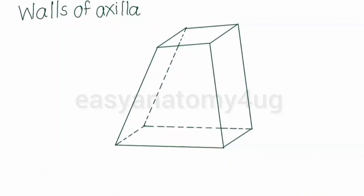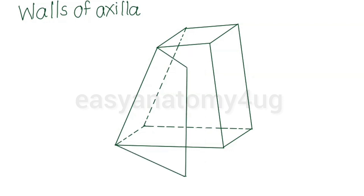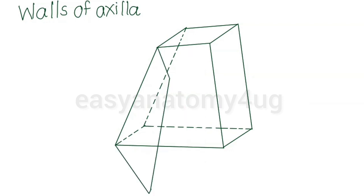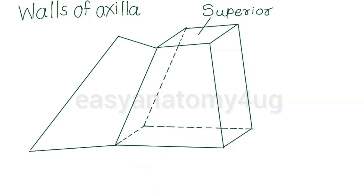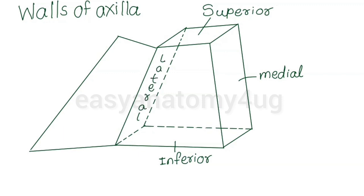Hello friends, let's learn important diagrams to be drawn in the long answer question or short note of axilla. The walls of axilla are superior, inferior, medial, lateral, anterior and posterior, which are shown in this animation.